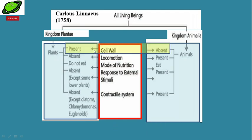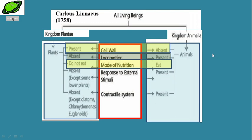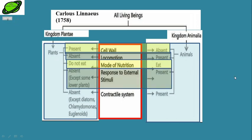Cell wall is present in plants but absent in animals. Locomotion is completely absent in plants, whereas it is a characteristic feature of animals. Regarding mode of nutrition, plants have chlorophyll and can synthesize food on their own — so all autotrophic organisms were classified in plants, whereas those which require eating were classified as animals.